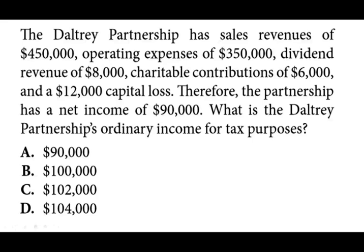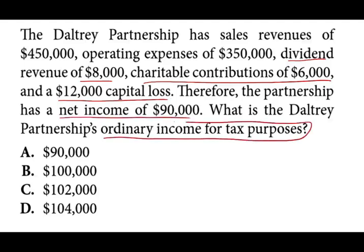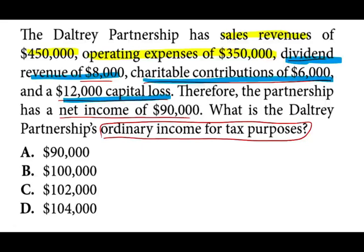This partnership has sales revenue of $450,000, operating expenses of $350,000, dividend revenue of $8,000, a charitable contribution of $6,000, and $12,000 of capital loss. Therefore the partnership has a net income of $90,000. The question asks: what is the partnership's ordinary income for tax purposes? There's a lot of information here, so you need to understand several things before you can answer properly. We're dealing with a partnership — they give us sales revenue of $450,000, operating expenses of $350,000, plus other items like dividends, charitable contributions, and capital losses.